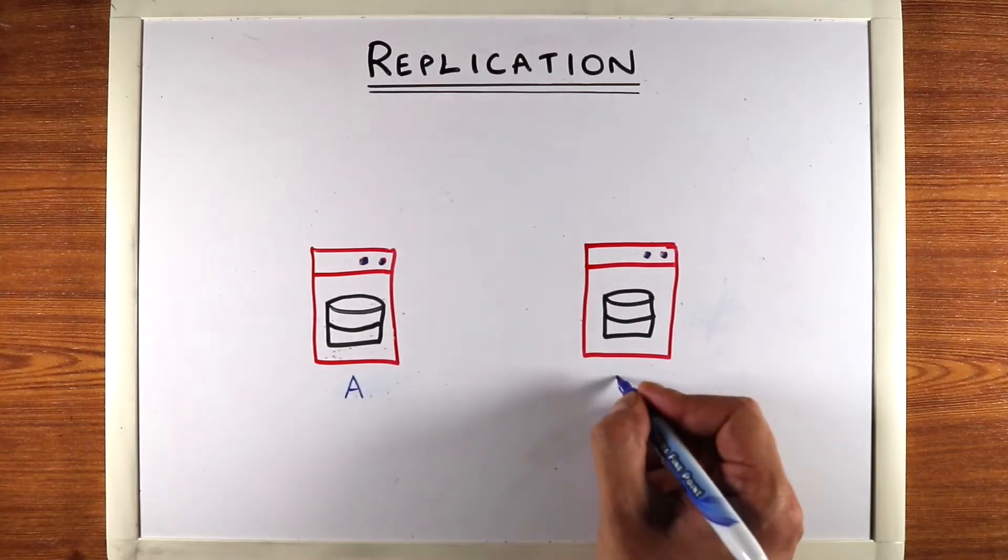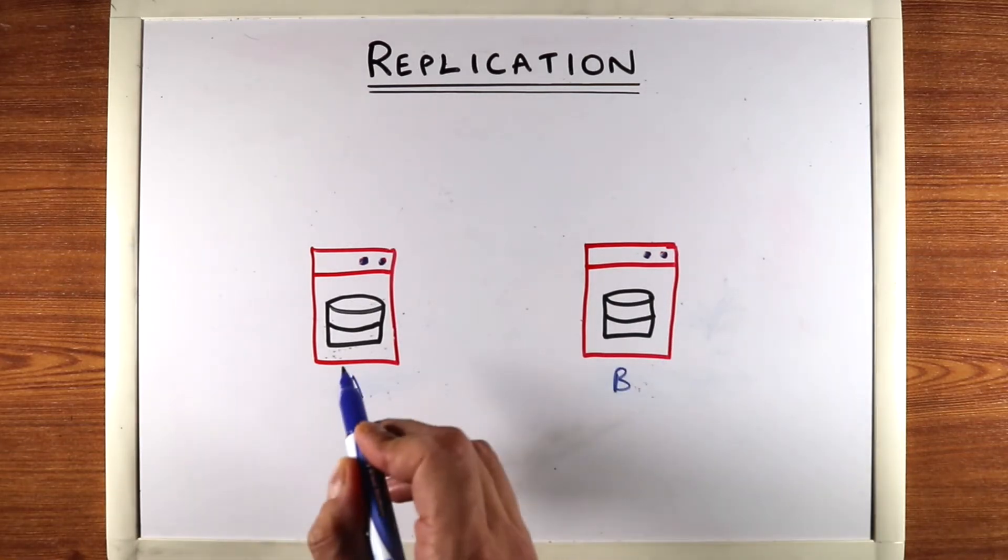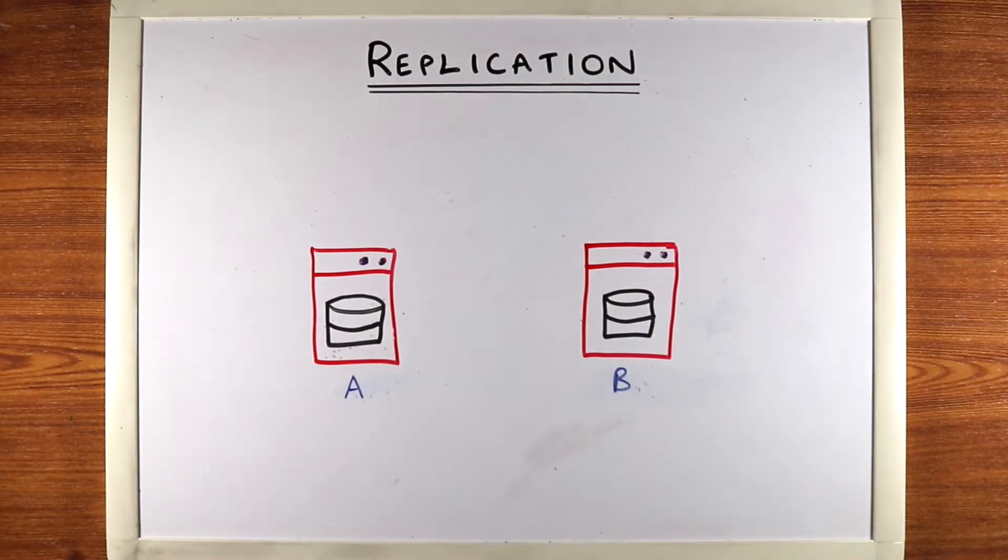So now we have these two machines, A and B, and we want to replicate both of these machines so both of these will be copies of each other.